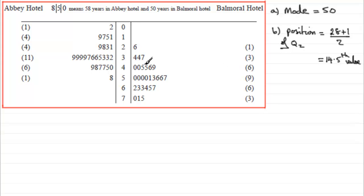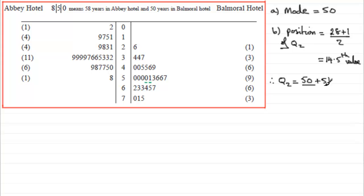Since the position is 14.5, it falls between the 14th and 15th values. Counting through the data, the 14th value is 50 and the 15th value is 51. So we take the mean of those two values: (50 + 51) ÷ 2 = 50.5. Therefore Q2, the median age, is 50.5.